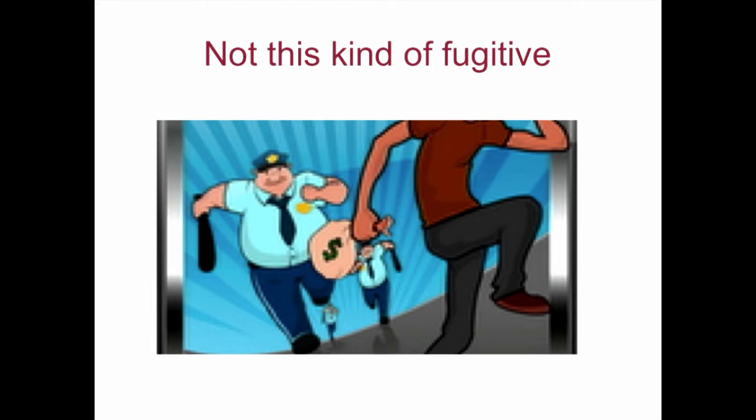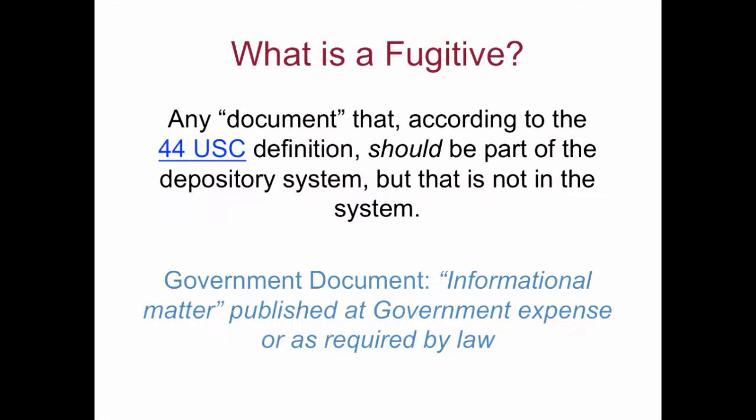Our topic today is fugitive documents. I never liked that term because it has a connotation that implies that these documents have somehow escaped the system. That analogy implies that the FDLP is like a prison. I like to think more that we call these publications fugitives because they were available only fleetingly and then disappeared quickly, which is an actual definition of the term fugitive. But the point is that these were documents that FDLP libraries could expect they would get but did not — they were outside the FDLP.